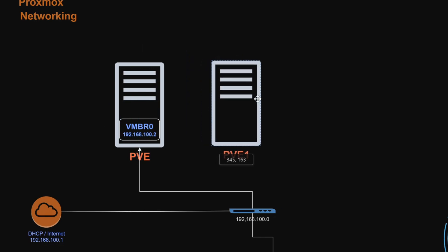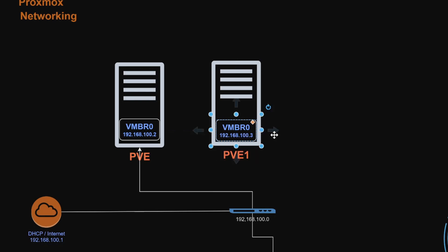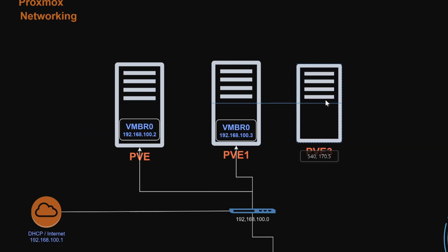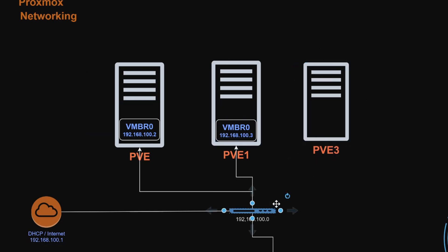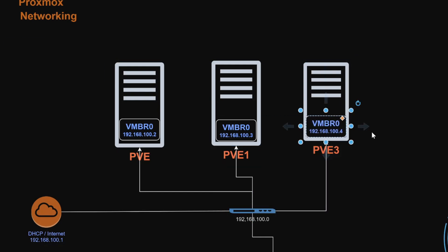I have created one more node which is PVE1 with IP address 192.168.100.3, and the same vmbr0 is defined here, physically connected to the same network. Similarly, I have a third Proxmox node also connected here, getting the IP address 192.168.100.4. So three Proxmox nodes are connected for the cluster.